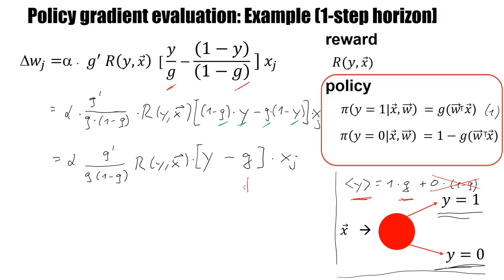So I can rewrite this g in the following form. I can say this is the average of y, whereas this is the actual y. And then I can copy the rest, xj α, g prime, g times 1 minus g, R(y,x). And this is my final update.